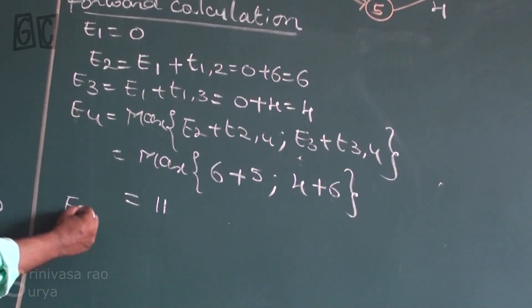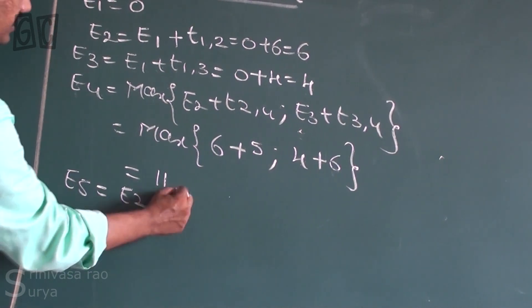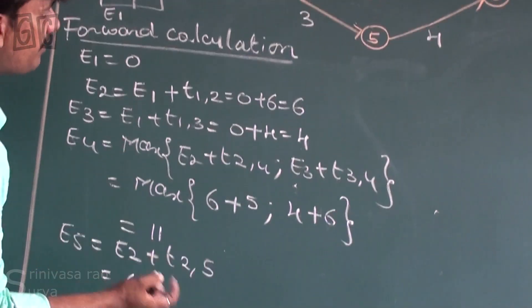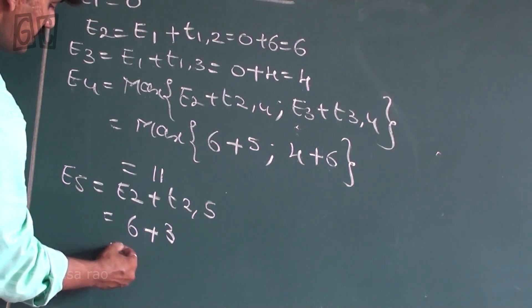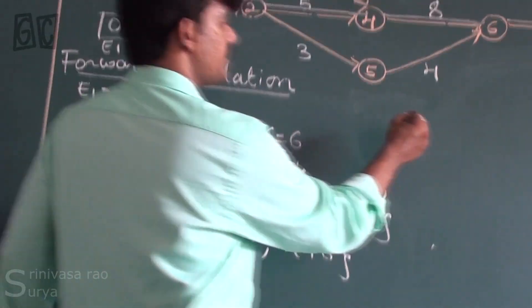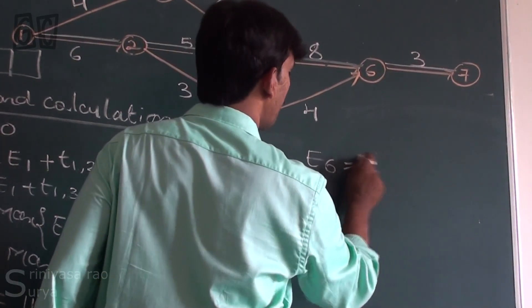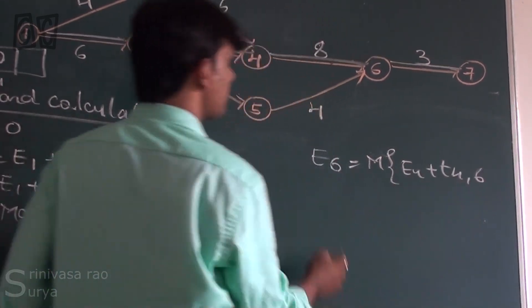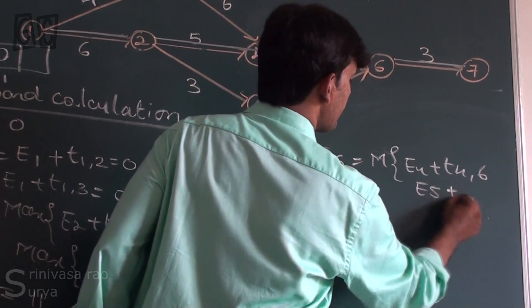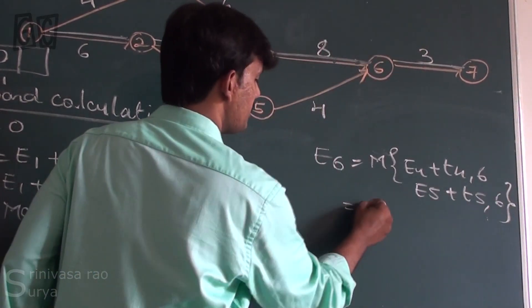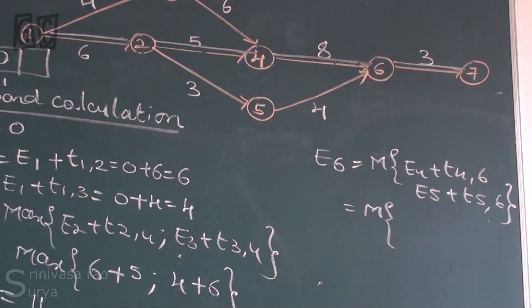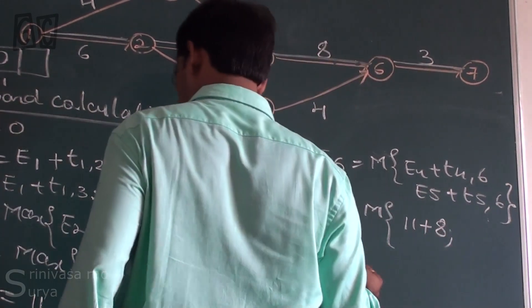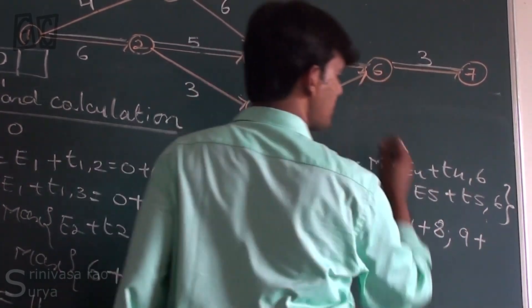Now E5: E5 is coming from only node 2, that is E2 plus time taken from 2 to 5, which is 6 plus 3 equals 9. E6 is coming from E4 and E5, so we take the maximum of E4 plus time taken from 4 to 6, and E5 plus time taken from 5 to 6, which equals maximum of (11+8) and (9+4), giving E6 equal to 19.